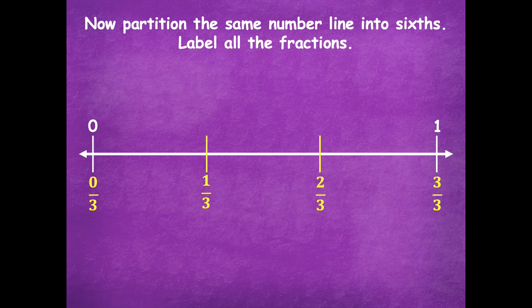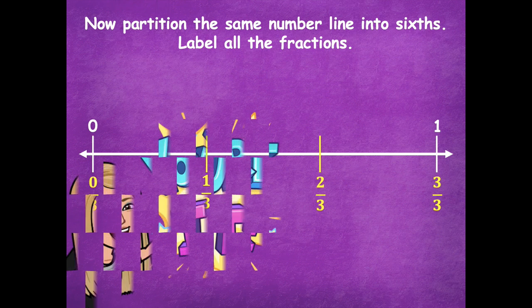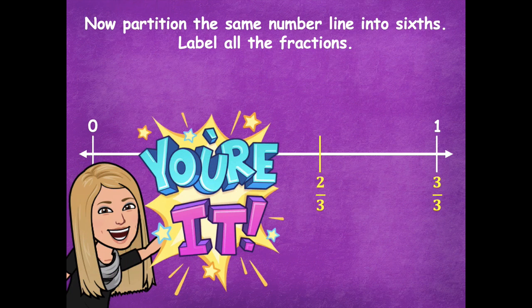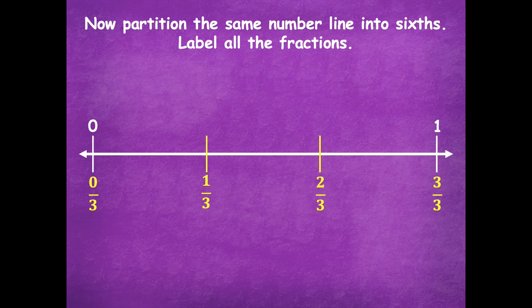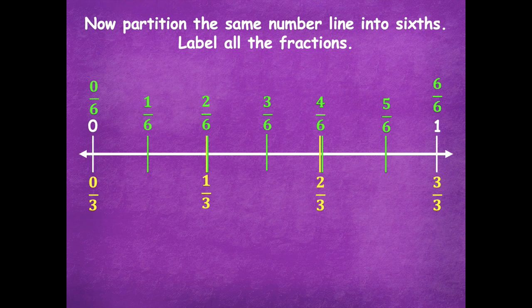So now we're going to partition the same number line into sixths and label all the fractions. Pause the video, partition the same number line into sixths, label all the fractions, and then click play when you're ready. Here are my sixths. Remember, we learned in the previous lesson that if we have thirds, we would just cut that in half to make sixths. So I'm going to put my other lines in and label: zero sixths, one sixth, two sixths, three sixths, four sixths, five sixths, and six sixths. Did yours look like that too?